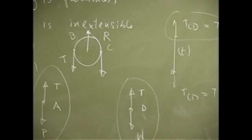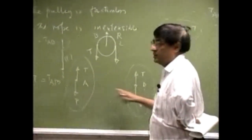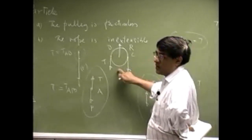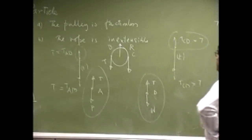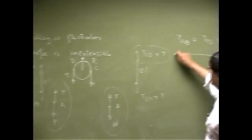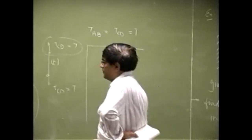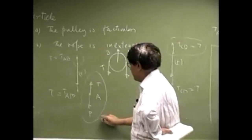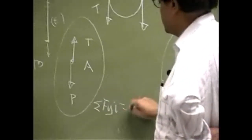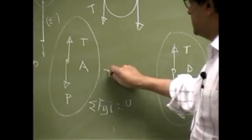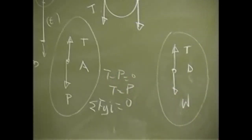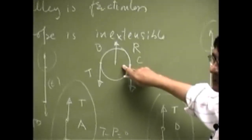So now we have a total of five free body diagrams: the free body diagram of point A, point D, the two ends of the rope, and the pulley. We can write the equations of equilibrium. Summing forces in the y-direction for point A gives: T minus P equals zero, so T equals P.